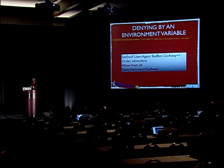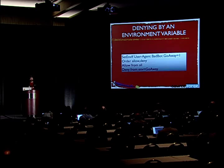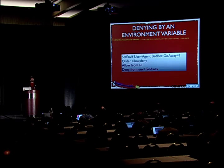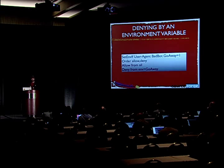Here's an example of using an environment variable as access control in 2.2 syntax. I'm going to use the SetEnvIf directive to say: if the user agent field matches the regular expression 'bad bot,' then set an environment variable called 'go_away.' Then I say 'deny from env=go_away.' This is a simple way to restrict access from a certain user agent.